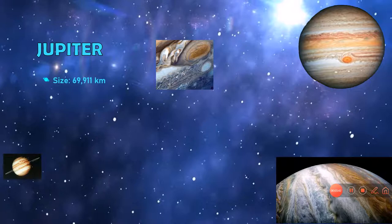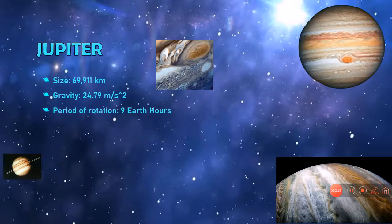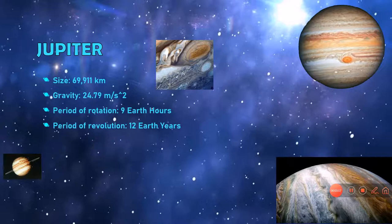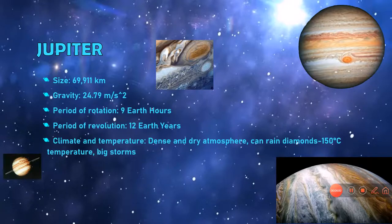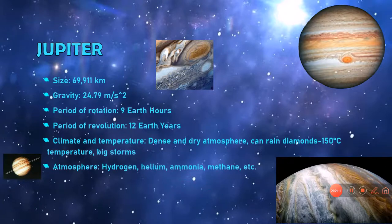Jupiter. The size of Jupiter is a whopping 69,911 kilometers. Jupiter's gravity is a whopping 24.79 meters per second squared. Jupiter's period of rotation is only 9 Earth hours, but its period of revolution is 12 Earth years. Jupiter's climate and temperature: it has dense and dry atmosphere and it could rain diamonds on Jupiter. It has minus 150 degrees Celsius temperature and big storms. One very concentrated storm is in its great red spot.